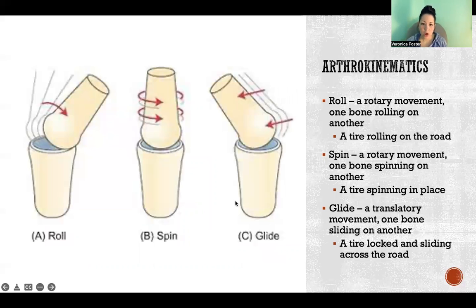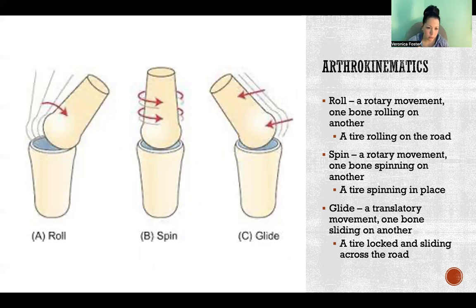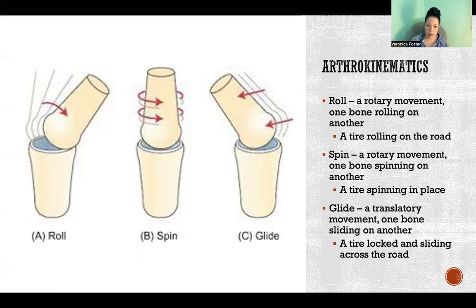Compared to arthrokinematics, where we're looking at the movement of the two bones relative to one another inside of the joint. These are motions that we can't visually observe because we can't exactly see how the two bones are articulating and interacting inside of the joint. The motion we see from the outside — that's the osteokinematics — where we see flexion, extension, or all those big obvious motions.